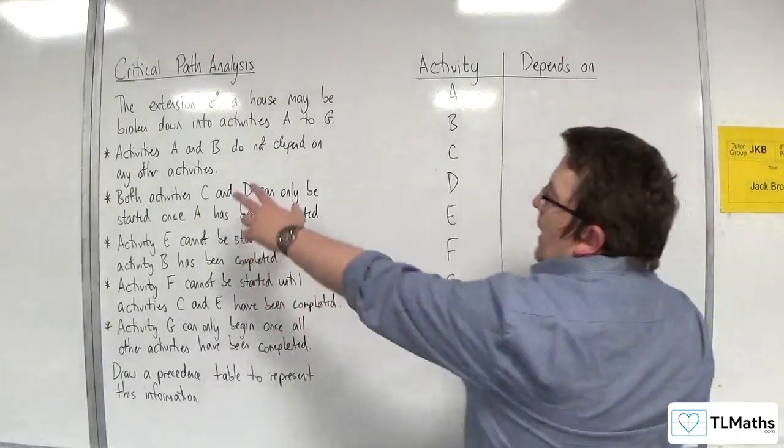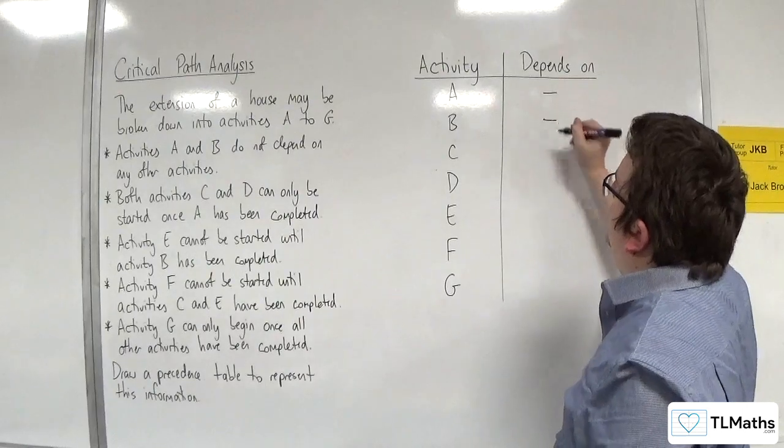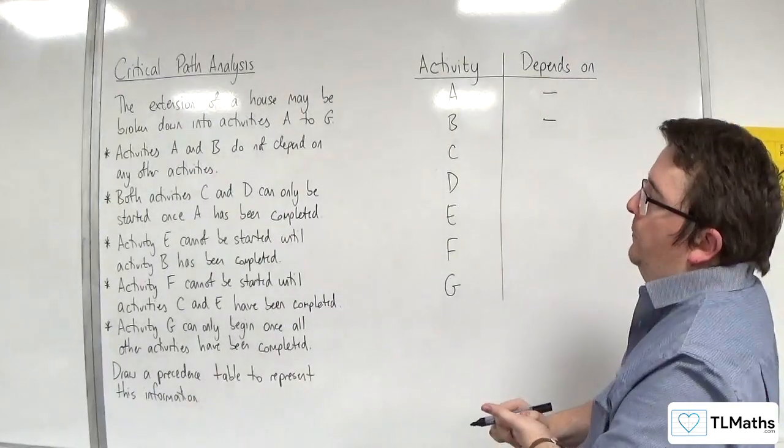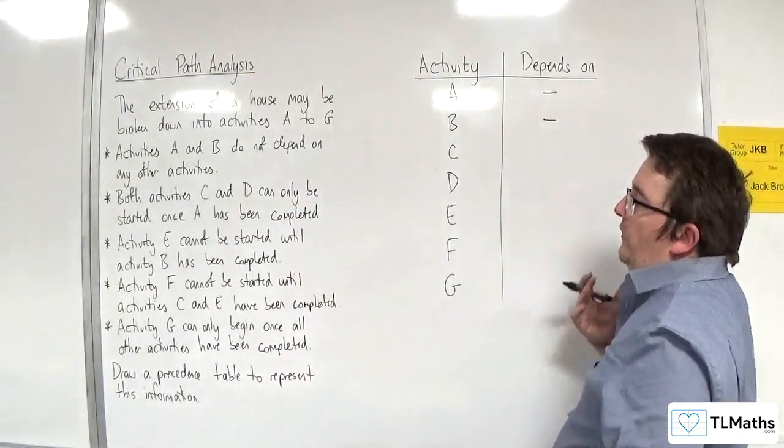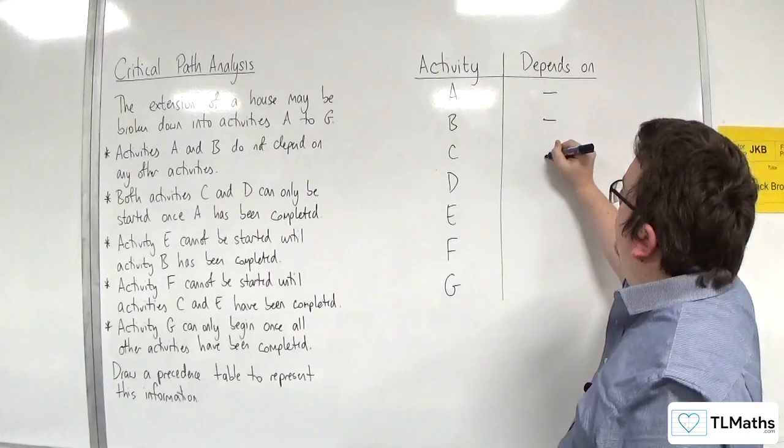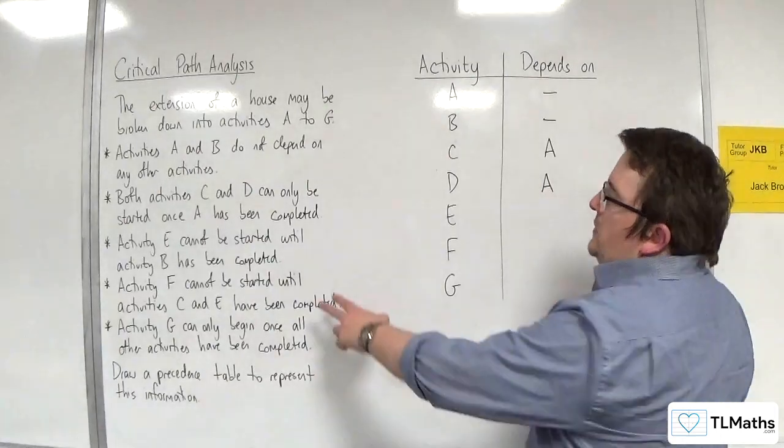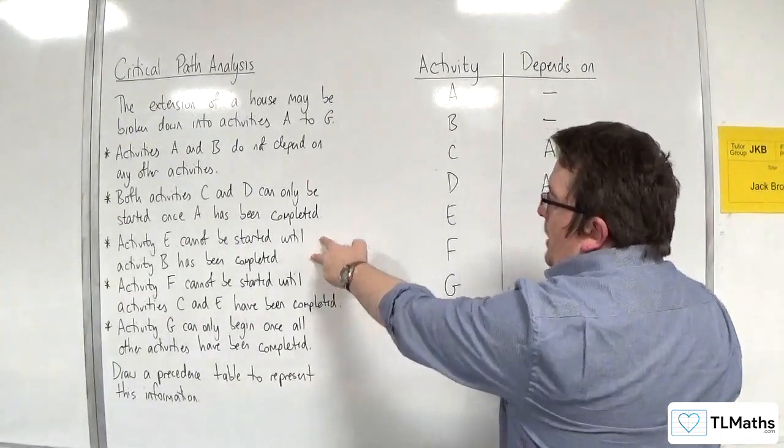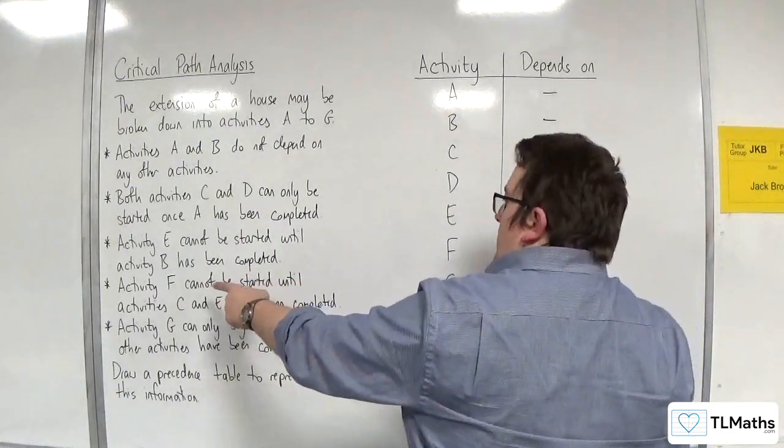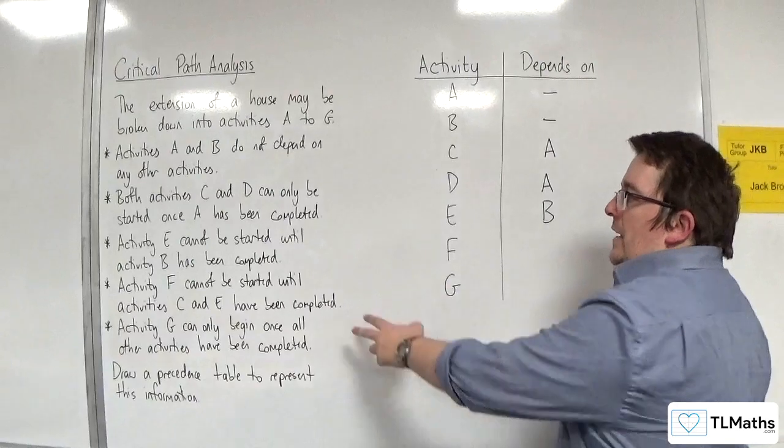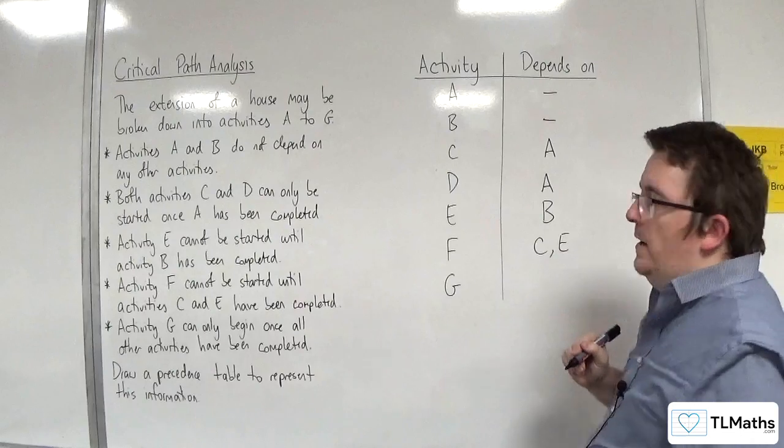So, activities A and B do not depend on any other activities. So, I can just put a dash in there for those. A and B don't depend on anything else. Both activities C and D can only be started once A has been completed. So, C depends on A and D depends on A. Activity E cannot be started until activity B has been completed. So, we can put in B there. And activity F cannot be started until activities C and E have been completed. So, we can put C, E there.